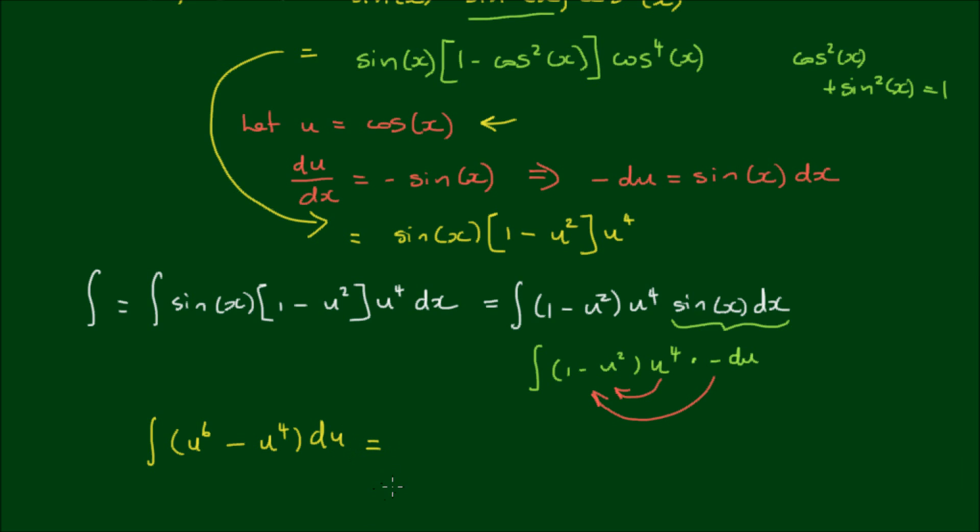And this is, of course, just a simple power integral. So the answer is u⁷/7 minus u⁵/5 plus an integration constant, c.